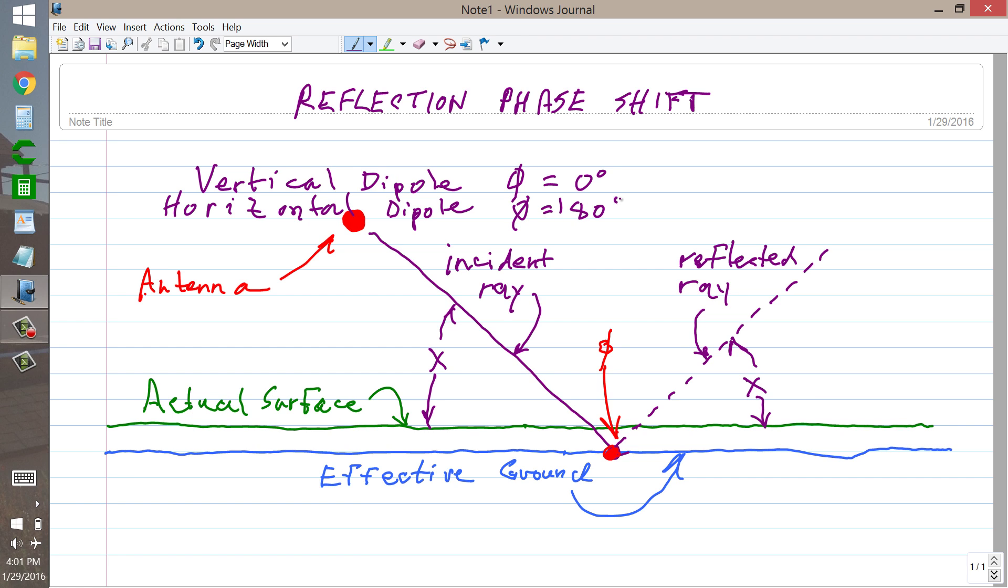Let me ask, why is the phase shift 180 degrees for a horizontally polarized electromagnetic wave, but 0 degrees for a vertically polarized electromagnetic wave?